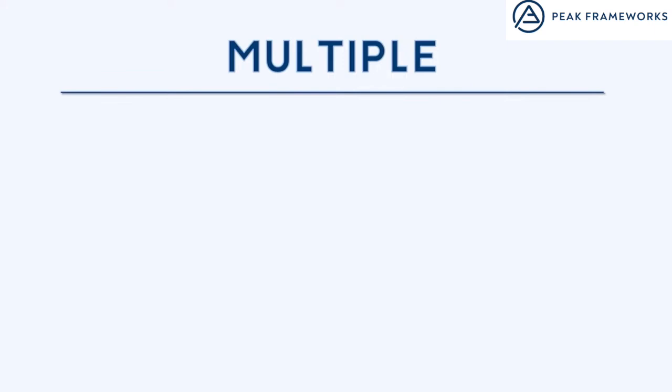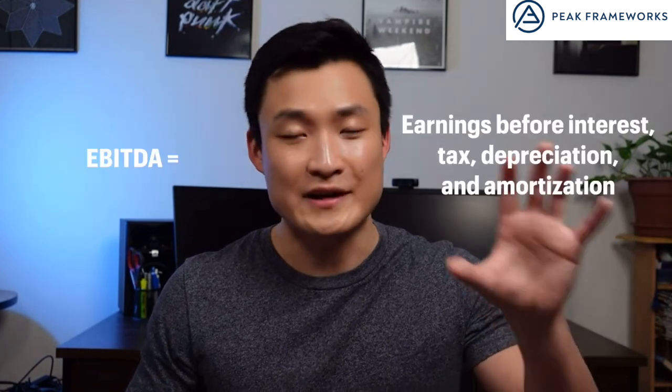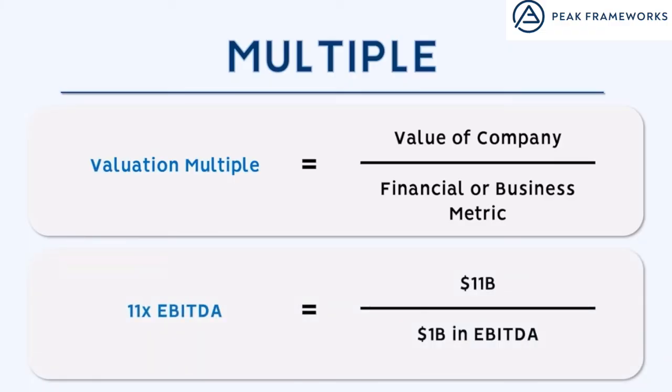A valuation multiple is simply the ratio between the valuation of a company and the trading metric that we're looking at, and what this multiple essentially tells us is how expensive a company is. We're going to be contrasting the value of a company to however much revenue, profit, or EBITDA that the company generates. Different companies are going to have dramatically different sizes and revenues or EBITDAs, so what we want to do is divide those two factors to get a multiple that's much easier to compare. For example, a company valued at $11 billion with $1 billion of EBITDA is valued at 11x EBITDA.